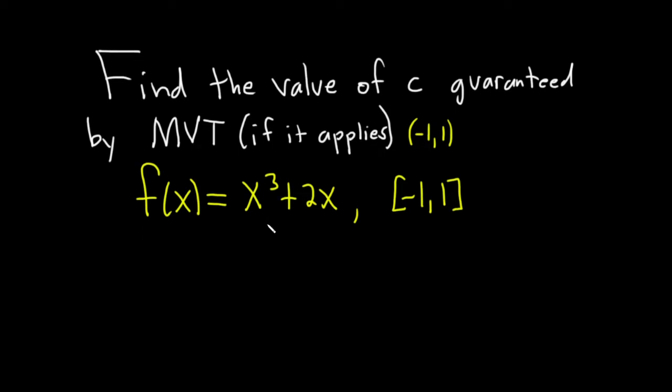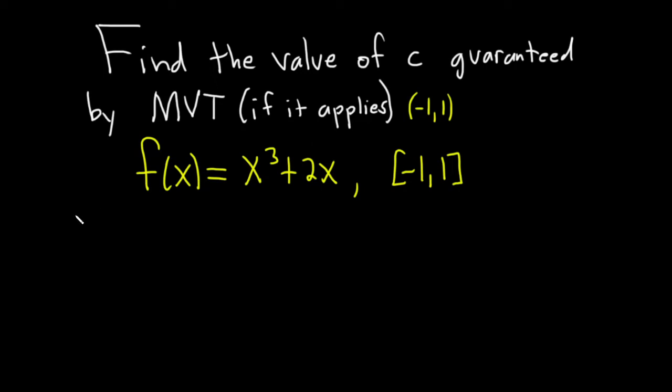It says if these conditions are satisfied then there exists some number c such that the derivative of f at c is equal to f of b minus f of a over b minus a. In this problem this is our a and this is our b. So if you have a function that's continuous on the closed interval and differentiable on the open interval, there is a number c in the interval such that the derivative is equal to this expression here.